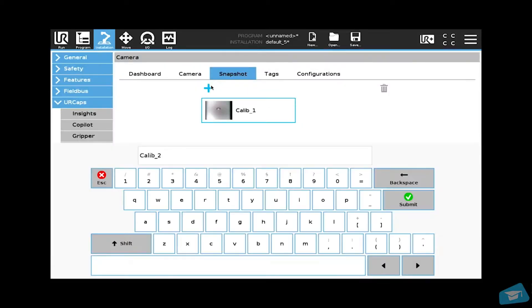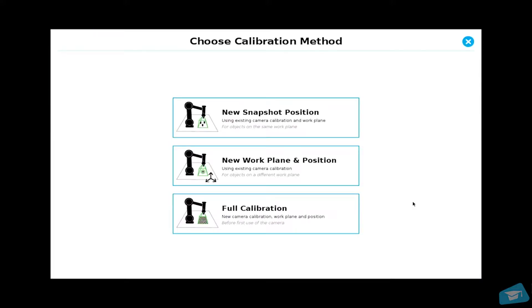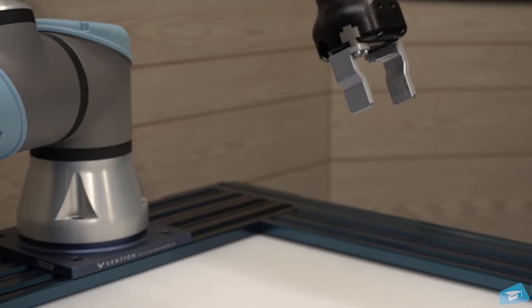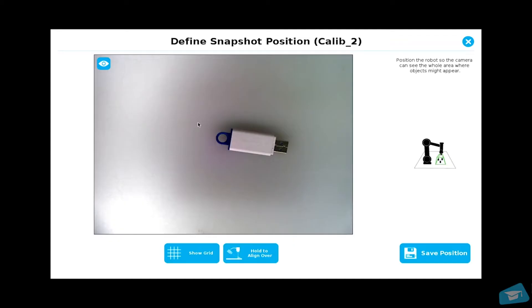Create a new calibration by pressing the plus button. Select the new snapshot position method. Move the robot closer to the same work surface. Save this position.